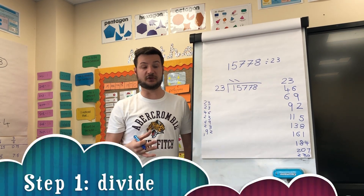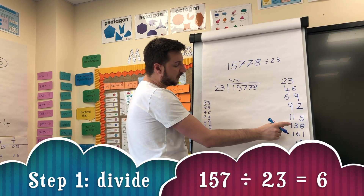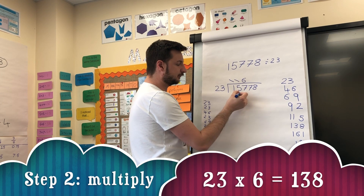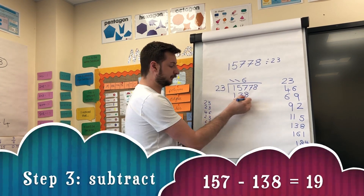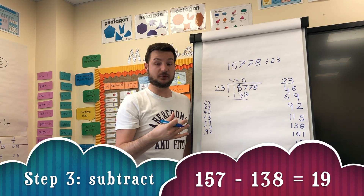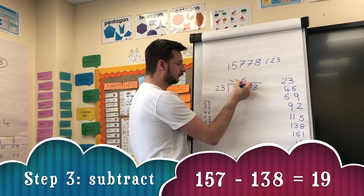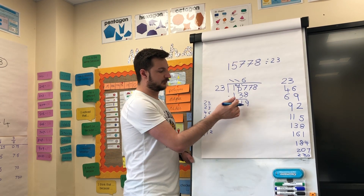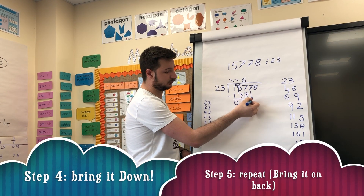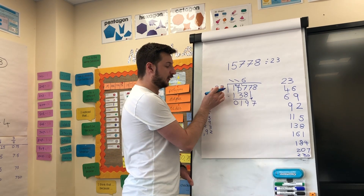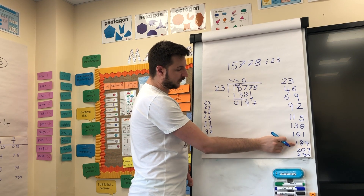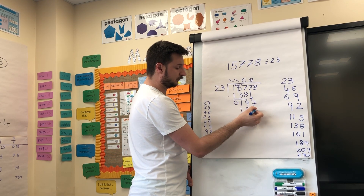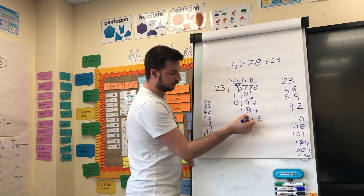Twenty-three's into a hundred and fifty-seven — so we're on the divide part. Looking for the closest place to a hundred and fifty-seven in the multiples list: it goes into a hundred and thirty-eight six times. Going to write a hundred and thirty-eight underneath and then subtract. Remembering if we need to exchange, we need to exchange. Next step: bring it down. And then bring it on back — we repeat. Twenty-three's into a hundred and ninety-seven goes in eight times. Eight times twenty-three is a hundred and eighty-four — there's the multiply. Subtract: we get thirteen. Final step: bring it down.